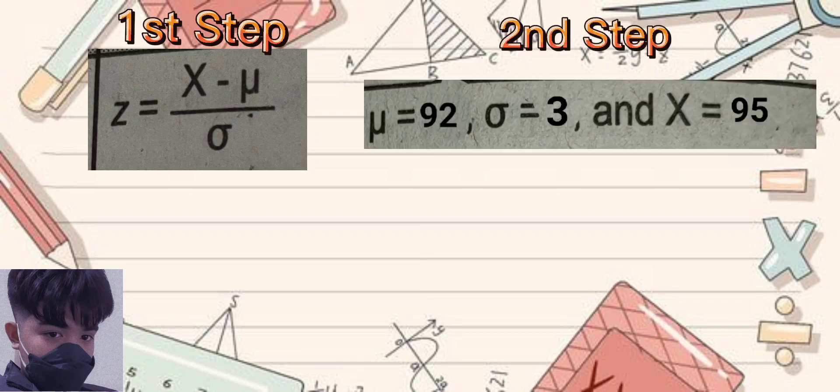Then, we will check the given values. We have 92 for population mean, 95 for X, and 3 for population standard deviation.